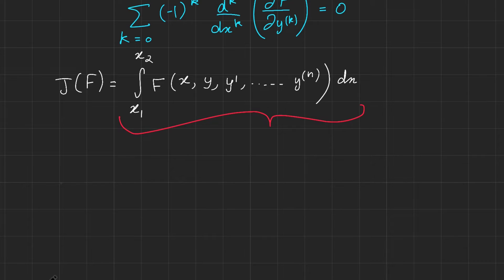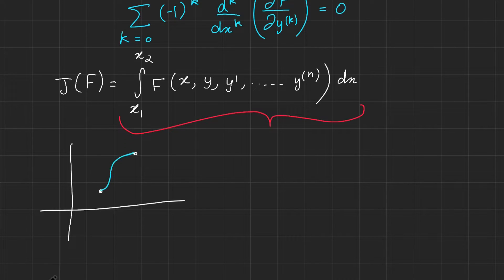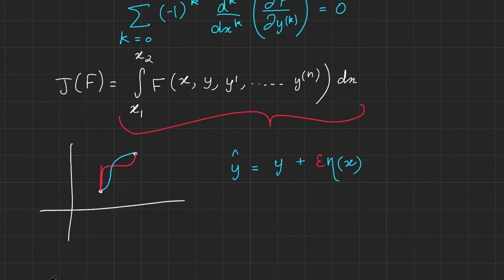We first consider our situation. We have two points, (x₁, y₁) and (x₂, y₂), and suppose we have an optimal path y between them — a continuous function, differentiable between the two points. We then consider a variation in y, called y_hat, which could be y plus some function η(x). We also want to be able to scale our variation, so we add an epsilon next to η(x). So it could be y + ε·η(x), or we could let epsilon equal zero, which gives the optimal path itself.